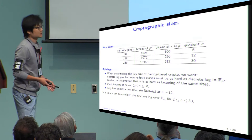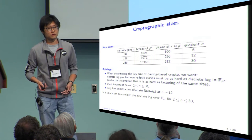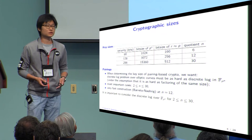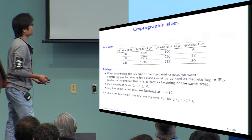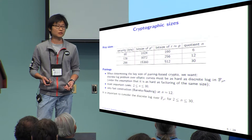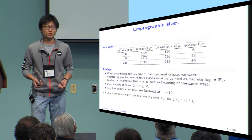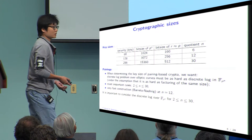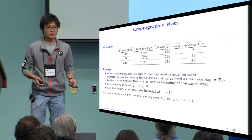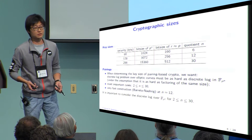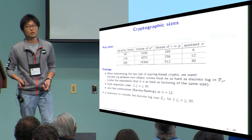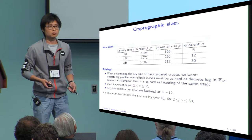When we determine the key size of pairing-based cryptography, we want the discrete log over the elliptic group to be as hard as the DLP over finite field F_{P^N}. The most interesting case in pairing-based cryptography occurs when the embedding degree is between 2 and 30. In particular, in the case of 128-bit security, we have a very efficient construction by the BN curve, which has embedding degree 12. So it is important to consider DLP over F_{P^N} where N comes from the embedding degree of the pairing.